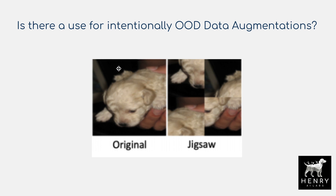Shown here in image augmentation is a great example of this. We have our original image of a dog and then the jigsaw augmentation, which randomly crops an image and then shuffles the ordering of the patches so that you have this new potential image pixel grid for learning from. This is completely out of distribution for natural images — there's no dog image that would be organized like this. So this is an intentionally out-of-distribution data augmentation.